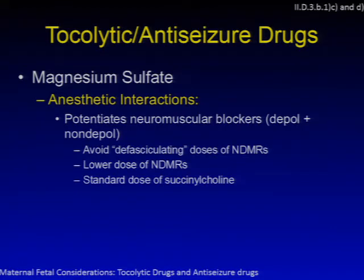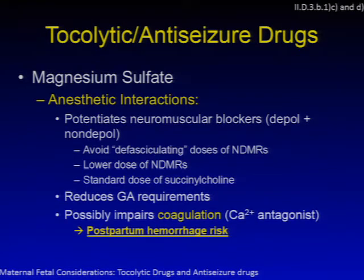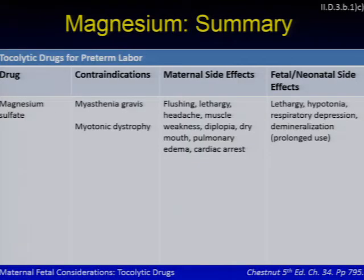Magnesium has important anesthetic interactions: it potentiates neuromuscular blockers — both depolarizing and non-depolarizing. Therefore, avoid defasciculating doses of non-depolarizing muscle relaxants, lower the dose of non-depolarizing muscle relaxants, but standard doses of succinylcholine can likely be used as shown in clinical studies. Magnesium can also reduce general anesthesia requirements — a serum magnesium level of 7 to 11 was associated with a 20% reduction in volatile anesthetic requirement in one study. It can also impair coagulation since it acts as a calcium antagonist, further placing women at risk for postpartum hemorrhage.